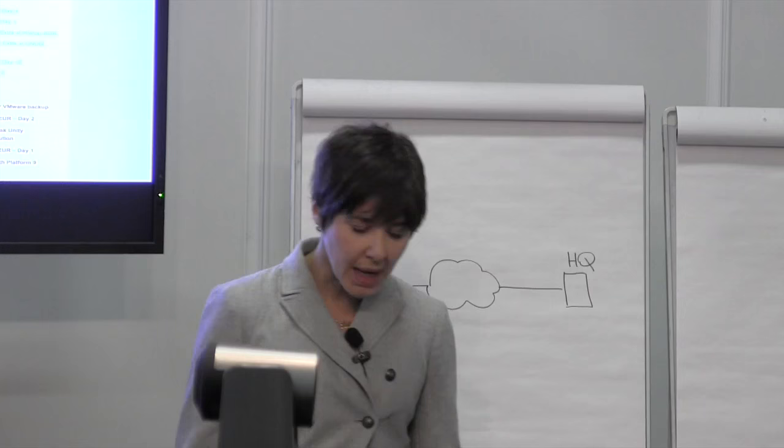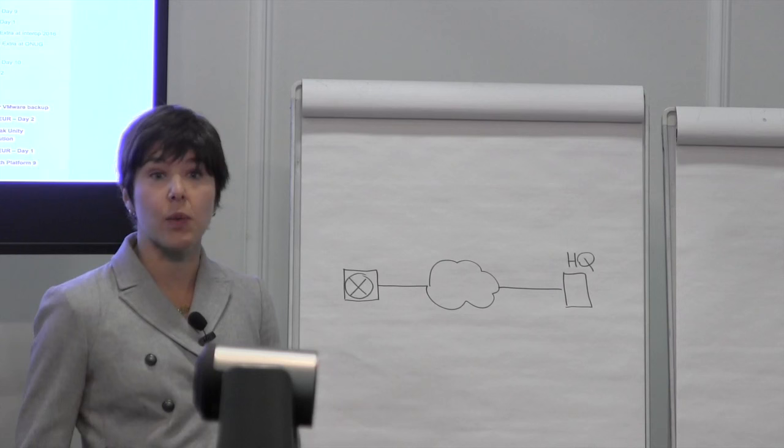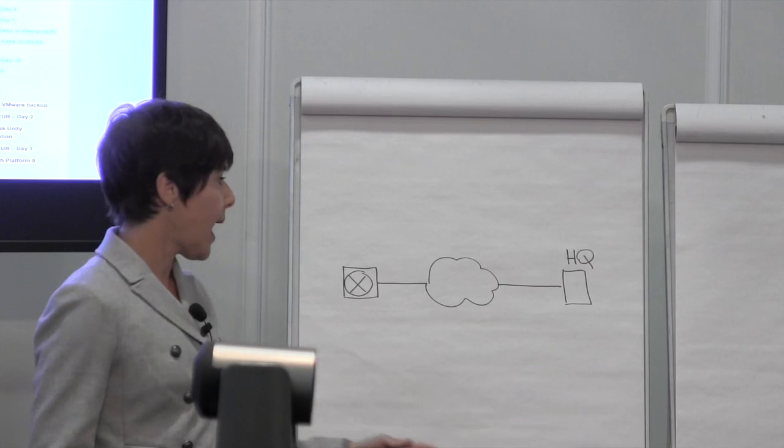Today we are going to cover threat defense techniques to secure an enterprise branch. First of all, let's start with what a branch is. An enterprise branch is really an extension of a corporate network, and it's traditionally connected to your headquarters through a WAN transport.